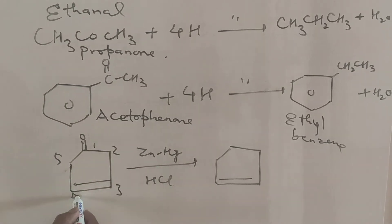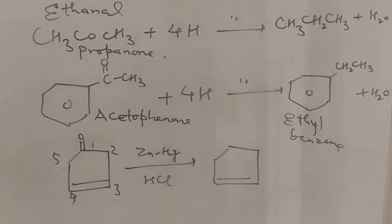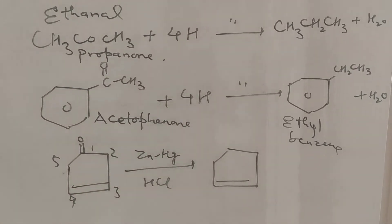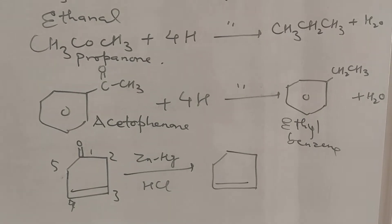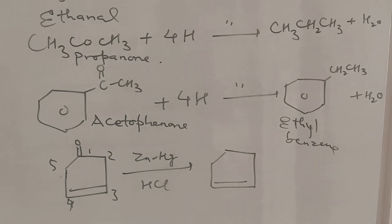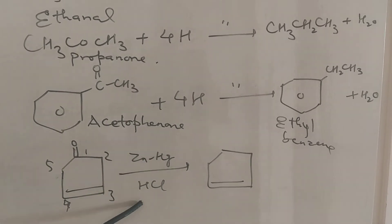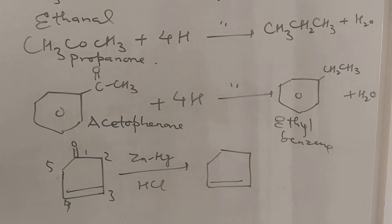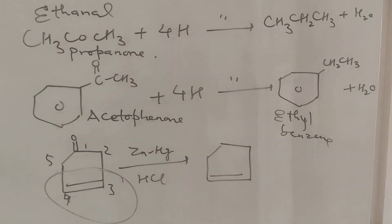Suppose we have cyclohex-3-en-1-one. When treated with zinc amalgam HCl, we get cyclohexene. The double bond remains unaffected.